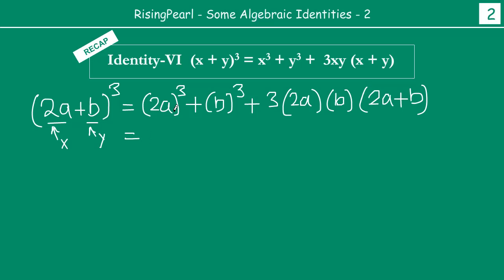So if you solve this, 2a times 2a times 2a, 2 twos are 4, 2s are 8, 8a cube, plus b times b times b is b cube, plus 3 times 2 is 6 times ab. This becomes 6ab times 2a plus b.